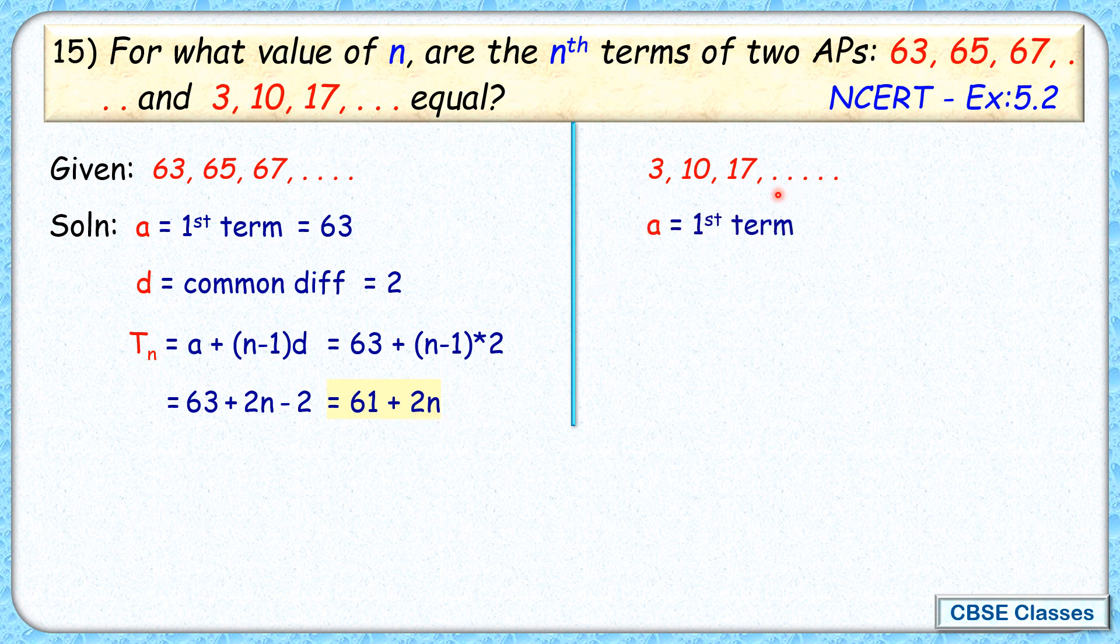For the second AP, the first term is 3 and the common difference is 10 - 3 or 7. The nth term, putting a as 3 and d as 7, is 3 + (n-1)×7. Opening the bracket, the nth term is 3 + 7n - 7. Simplifying, it's -4 + 7n.